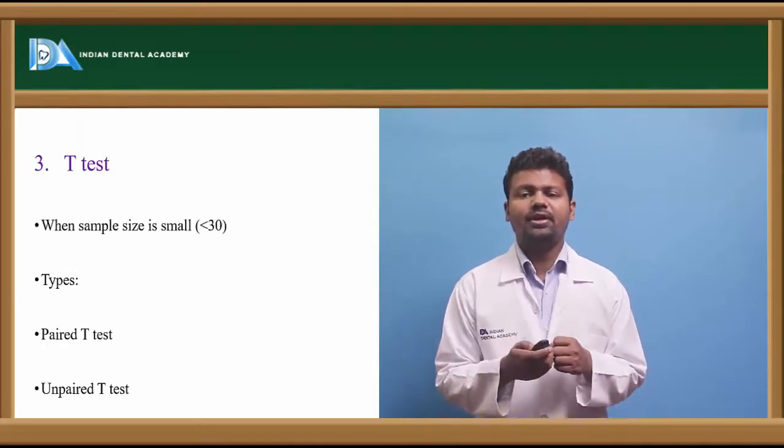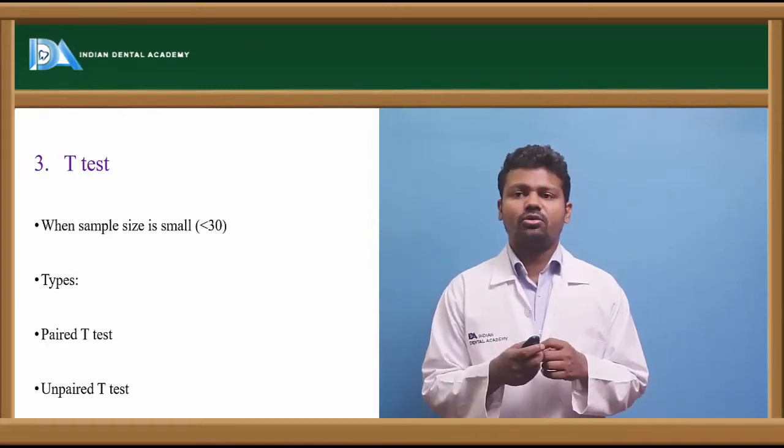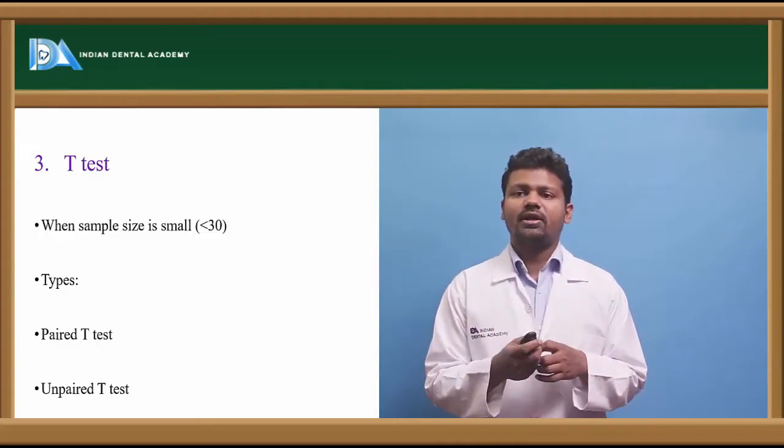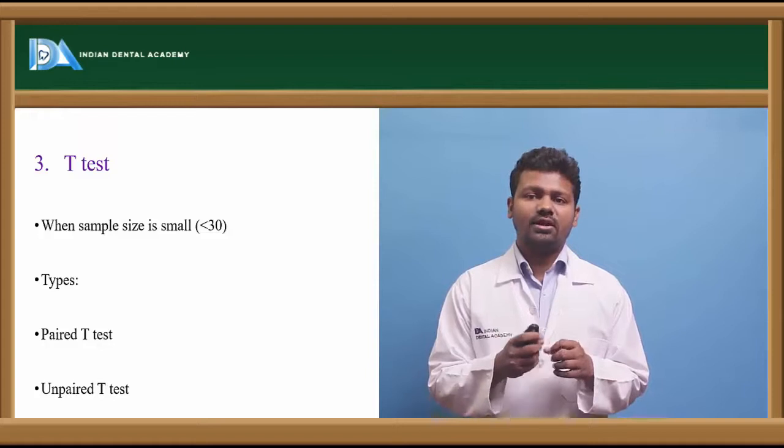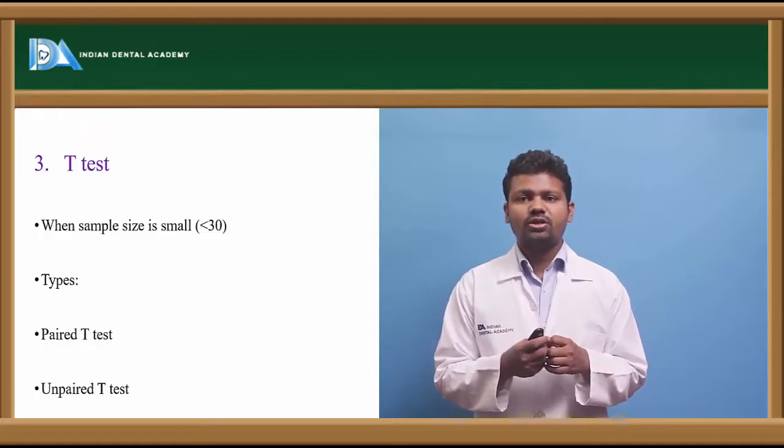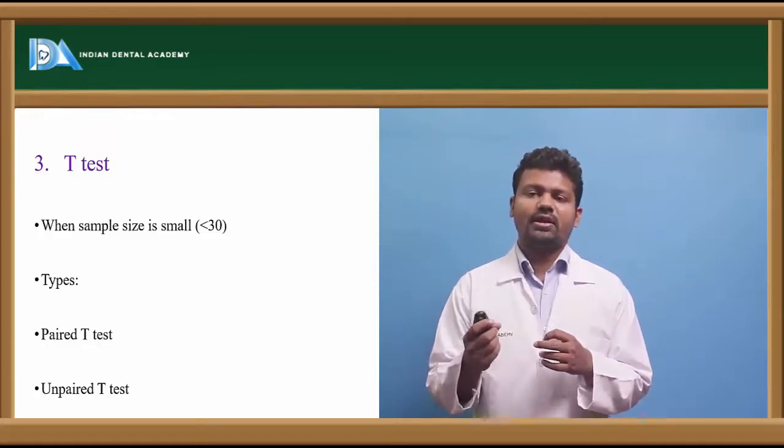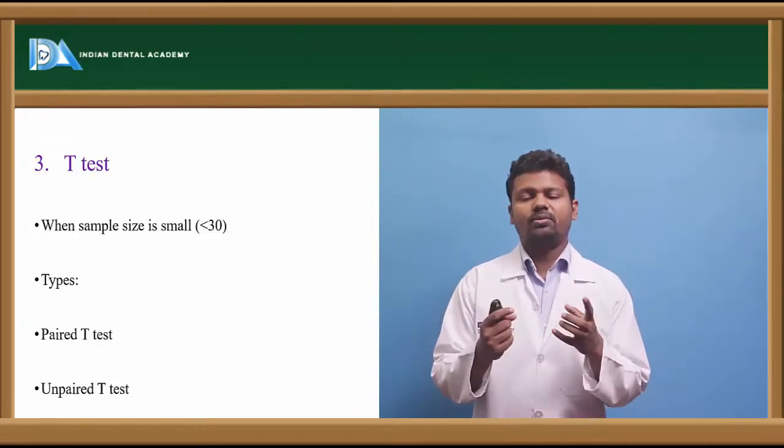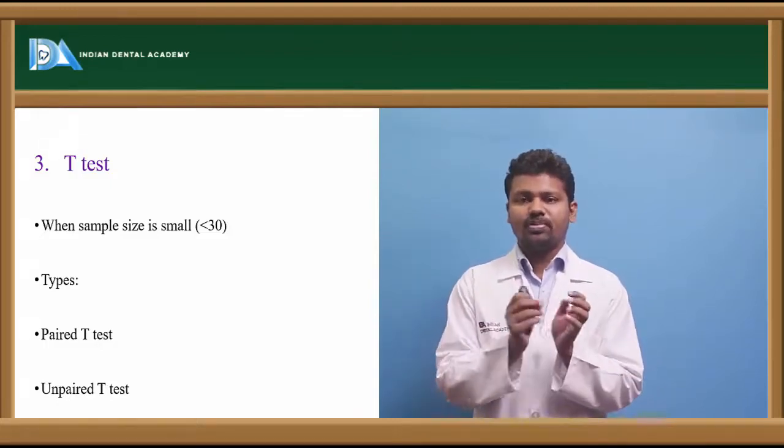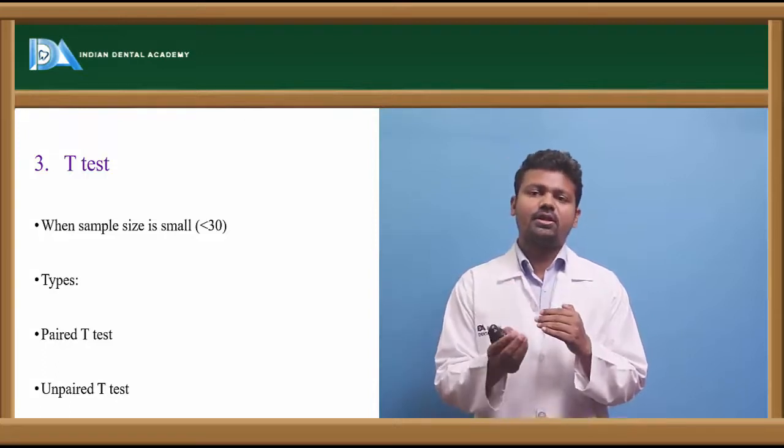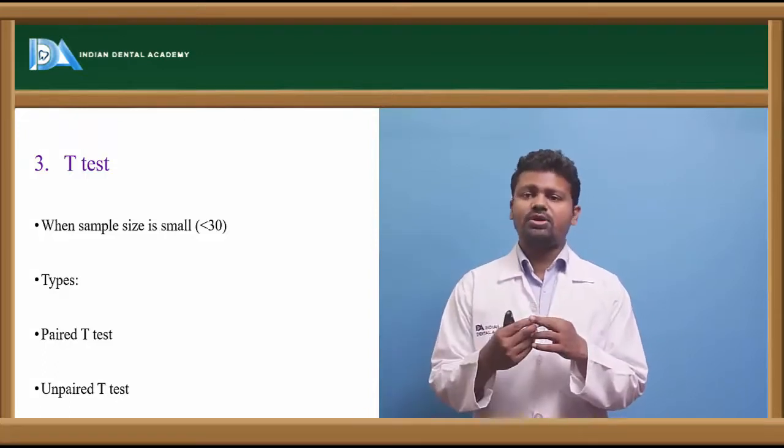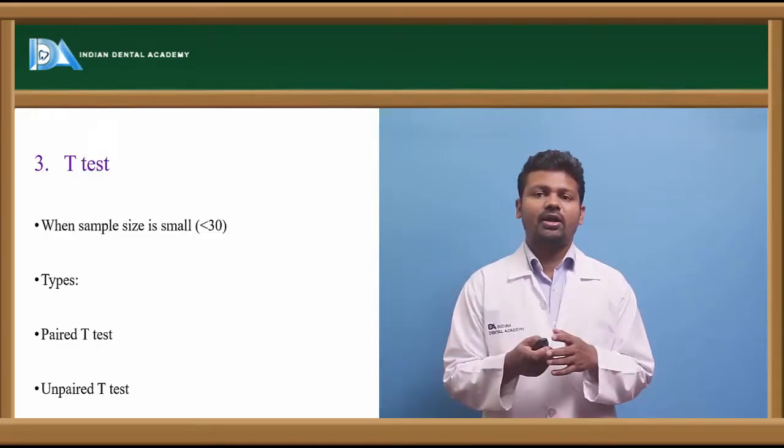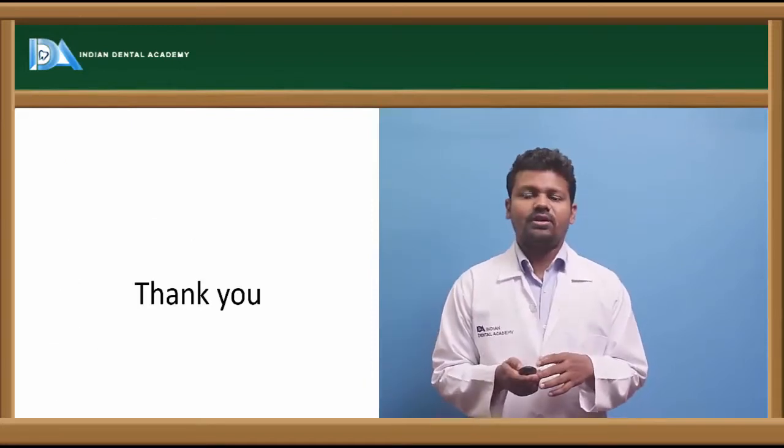The T-test is used when sample size is less than 30, whereas Z-test is for more than 30. It's also called Student's T-test. There are two types: paired and unpaired. Paired T-test is used when population means need to be paired. Unpaired T-test is used for individual values.